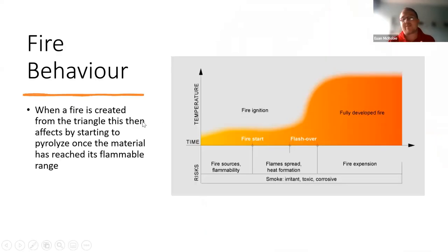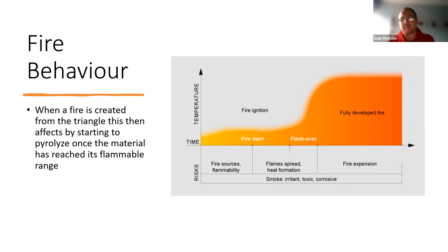Looking at the life cycle of a fire: once we have that perfect mixture — heat, fuel, oxygen, and the passive elements — a fire starts and engulfs what is around it. Pyrolysis heats up materials in that area and starts to give off more flammable gases, spreading within the room and increasing as it takes over the entire compartment.